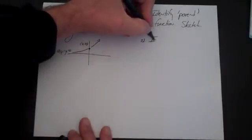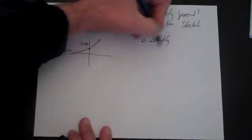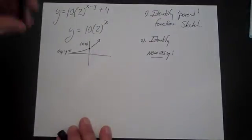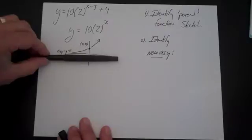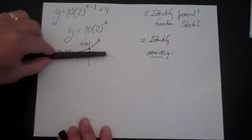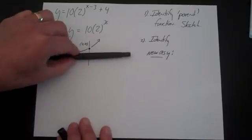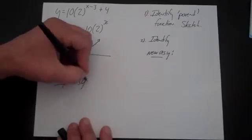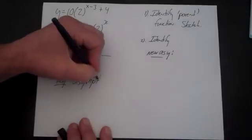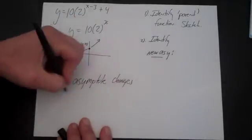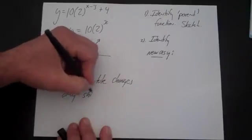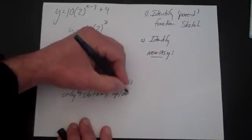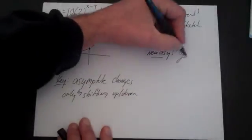The second thing is I identify the new asymptote and one new point. So the asymptote is y equals 0. Let's think about what happens to the asymptote. When we move it left and right, the asymptote does not change. When we move it up and down, it does. So that's the key to these problems. The asymptote changes only with shifts up and down.